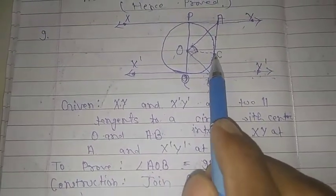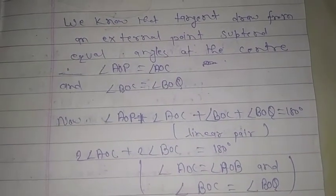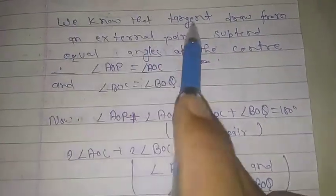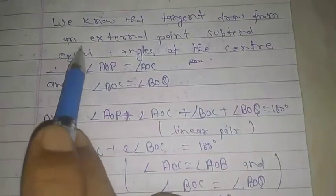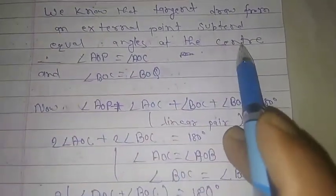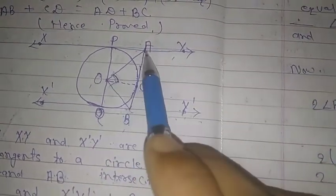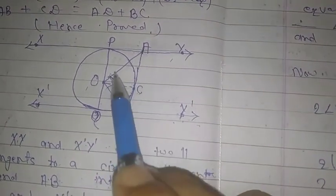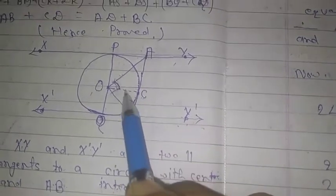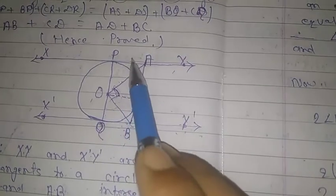Construction: join OC. We join OC. Proof: We know that tangents drawn from an external point subtend equal angles at the center. This means the tangents drawn from an external point subtend equal angles.